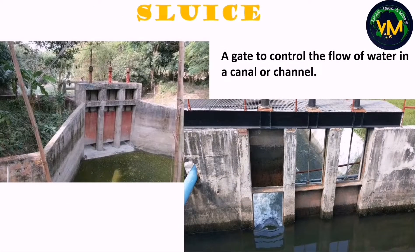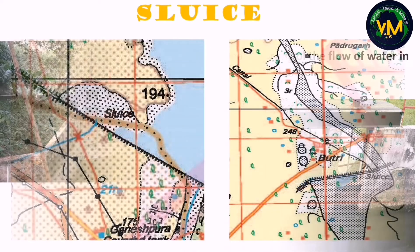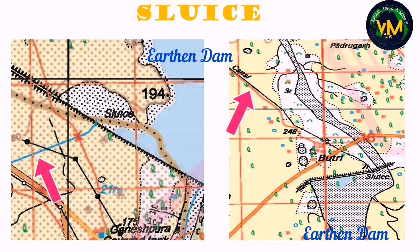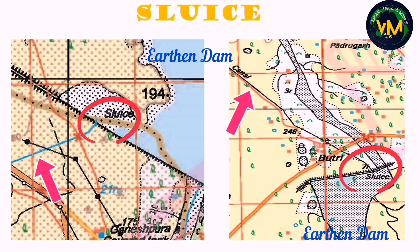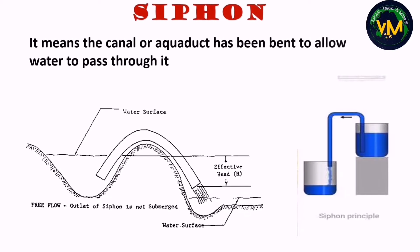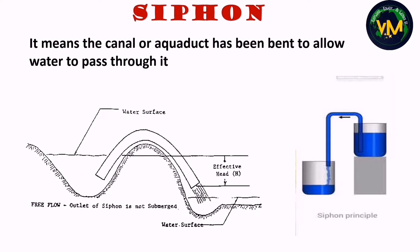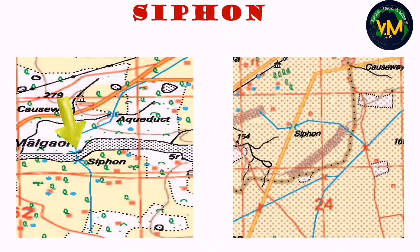Next is sluice — it is a gate to control the flow of water in a canal or water channel. In topo maps you can see dams across rivers, with canals flowing from them, and the place where the canal is connected to the dam is where you can see the sluice, which controls the flow of water to the canals. Next is siphon — it means the canal or aqueduct has been bent to allow water to pass through it, usually using pipes. In one picture the siphon allows a perennial canal to pass over a seasonal river, and in another it allows the canal to pass over a district road.